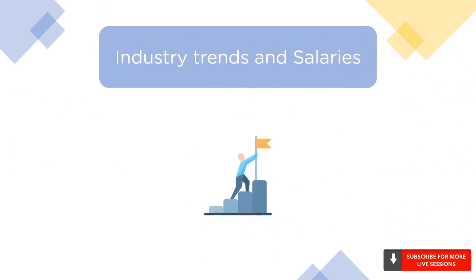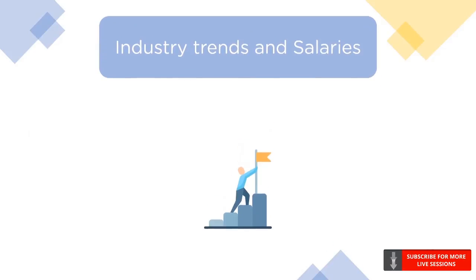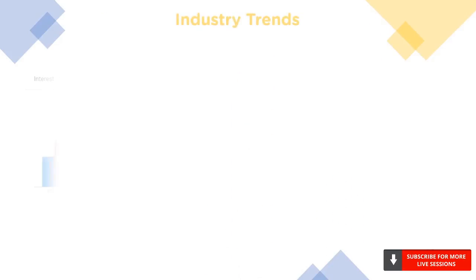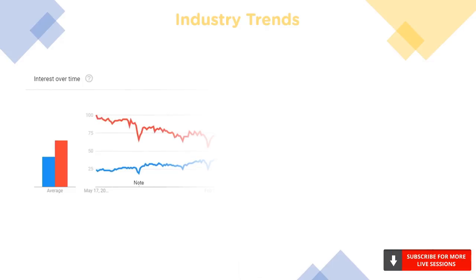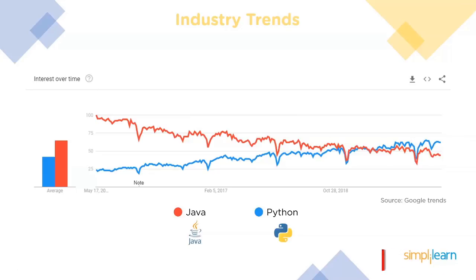Let's go through the industry trends and salaries for both Python and Java developers. The graph represents the growth of both languages over the last five years. We can see that Python has picked up over time and has become more popular than Java in recent times, mainly due to the increasing popularity of data science fields.